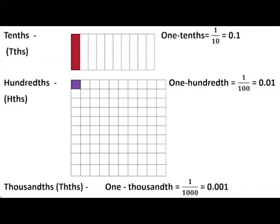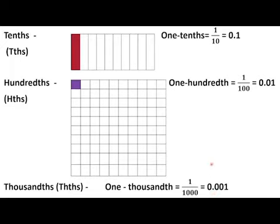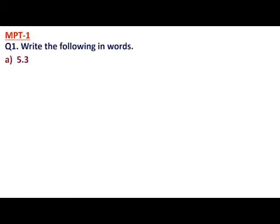Similarly for thousandths, we write one thousandth, represented as 1/1000, and in decimal it is 0.001, read as zero point zero zero one. After the decimal point it is the fractional part, and we read all the digits individually — like 0, 0, 1 — in this way we read a decimal number.